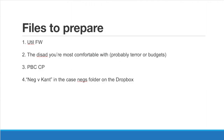The first thing is here's a list of files for you to prepare. First, you should have a file that proposes a counter-framework to what they have proposed — something like utilitarianism, which argues for preserving the greatest good for the greatest number, meaning it's a question of consequences. This is what you're most likely to read and what I would recommend. The next would be a disadvantage you're comfortable reading, probably the terror dis-ad or the budgets dis-ad — whichever one you think is strongest and you think you would best be able to defend.